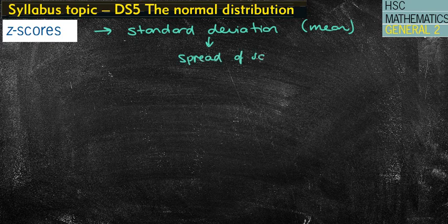Standard deviation refers to the spread of scores. So if the standard deviation is large, then the scores are more spread out. If the standard deviation is smaller, then they are closer together.